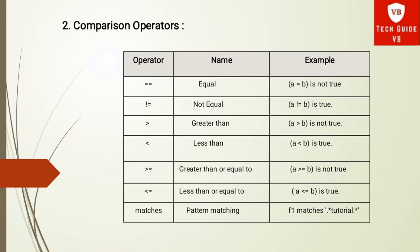The second type is the comparison operator. The first is equals (==), used to check if two operands are equal. Suppose A = 10 and B = 20, then A == B is not true. The second is not equals, which checks if two operands are not equal — it is the opposite of equals. Suppose A = 10 and B = 20, then A != B gives true. The third is the greater than operator, which checks if the left operand is greater than the right operand — A = 10, B = 20, then A > B is not true.